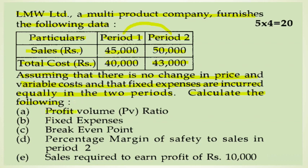We are asked to calculate the following: first, the profit volume ratio; second, fixed expenses; third, the break-even point; and fourth, the percentage margin of safety to sales for Period 2.